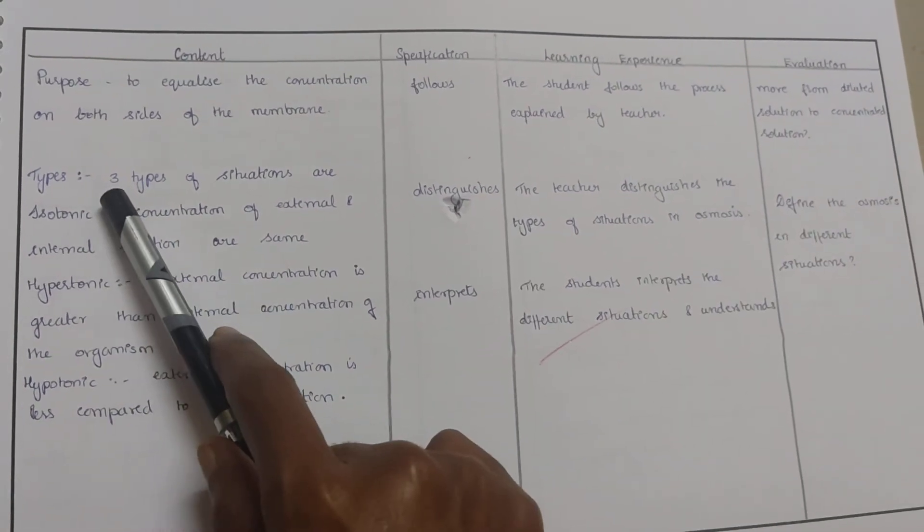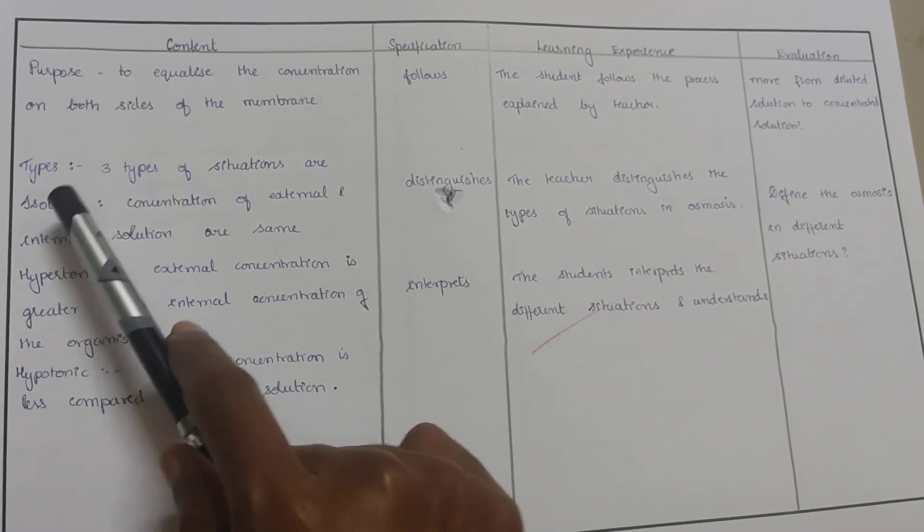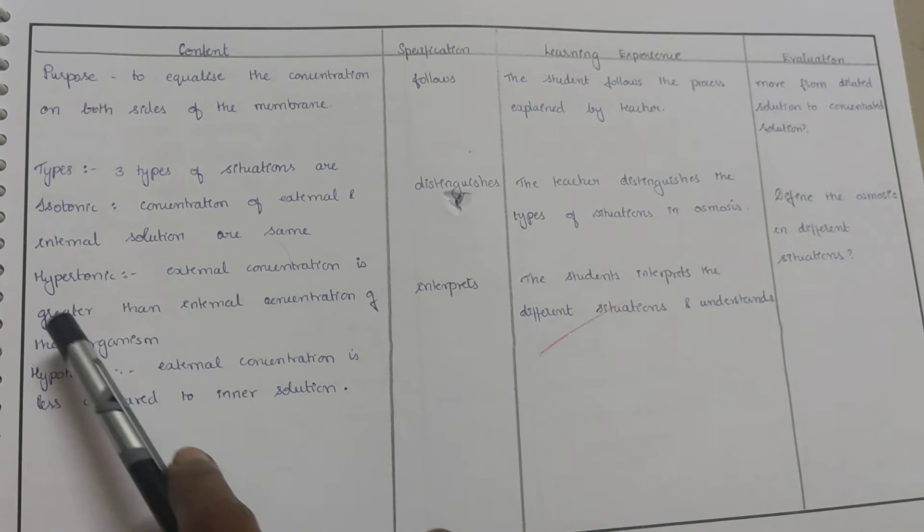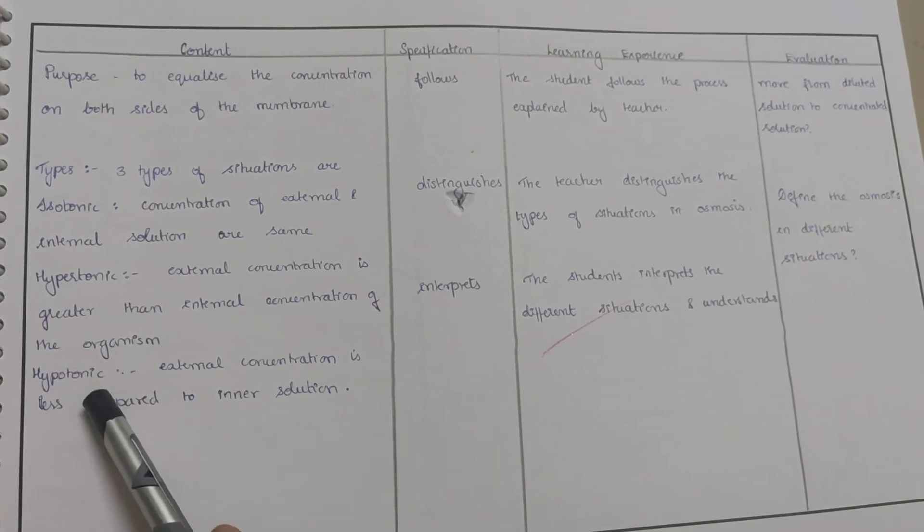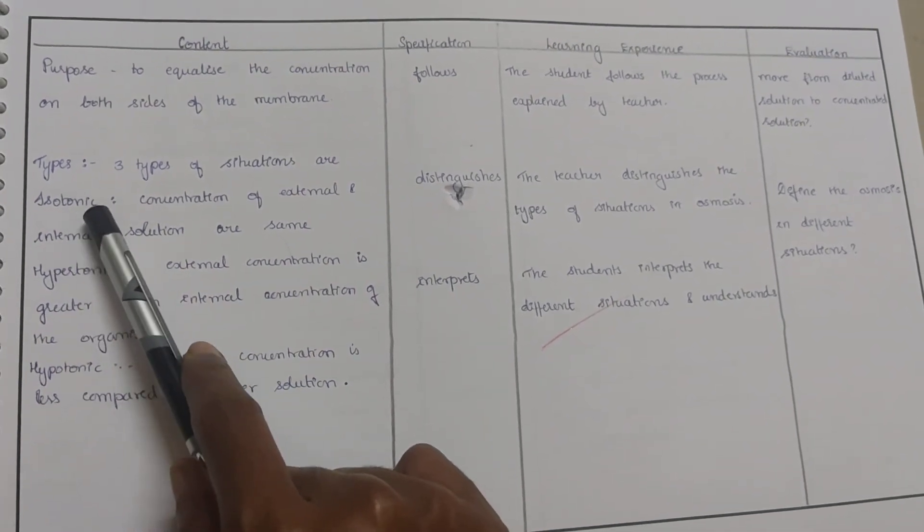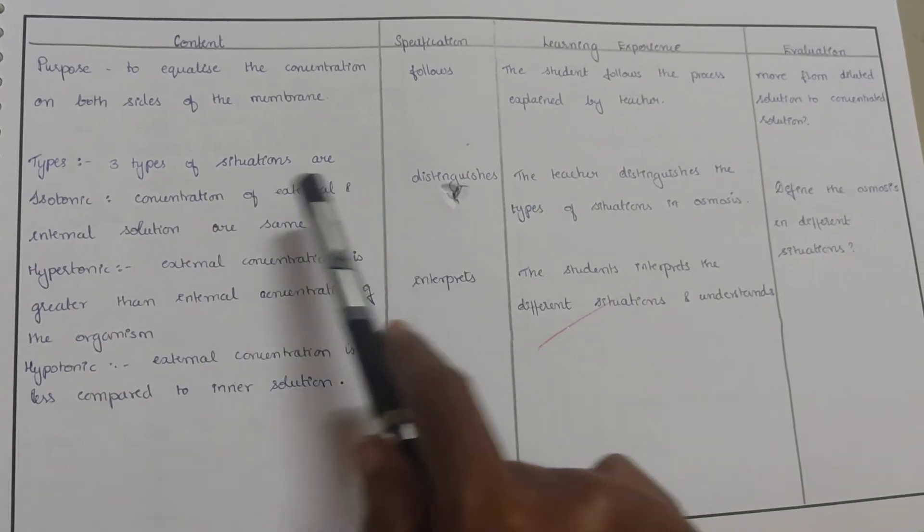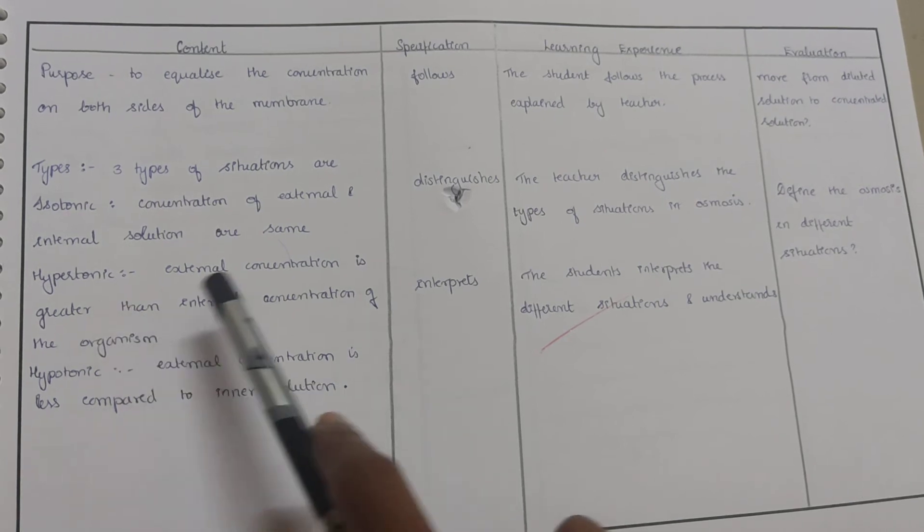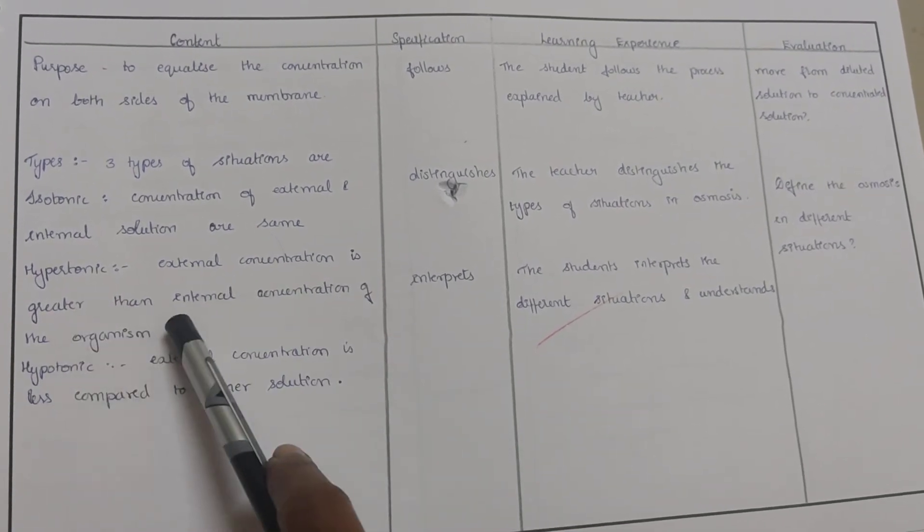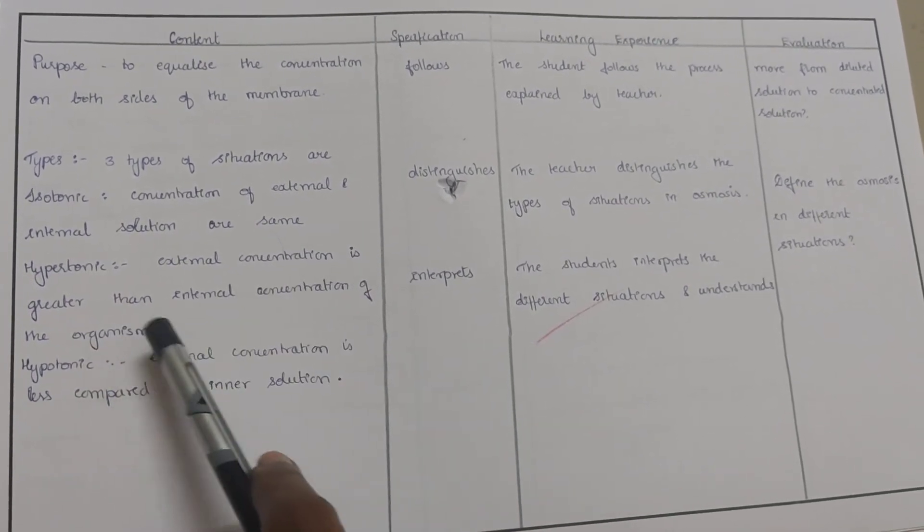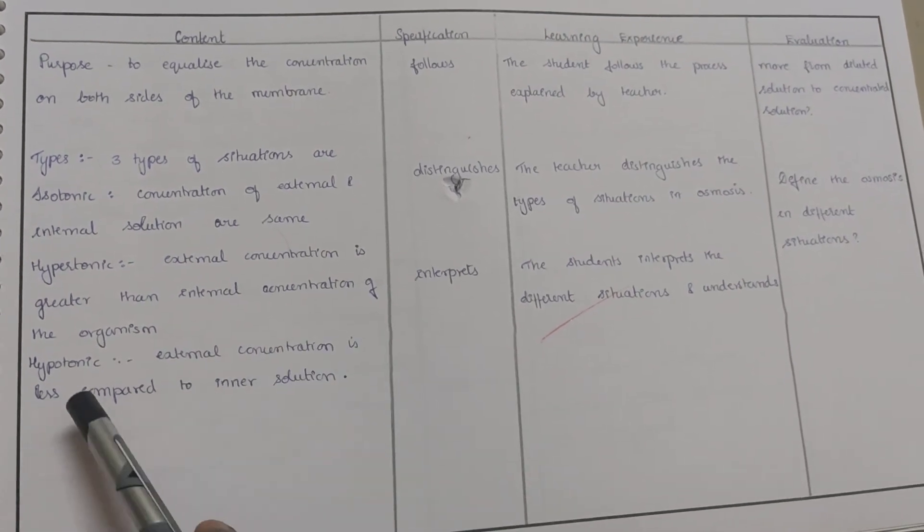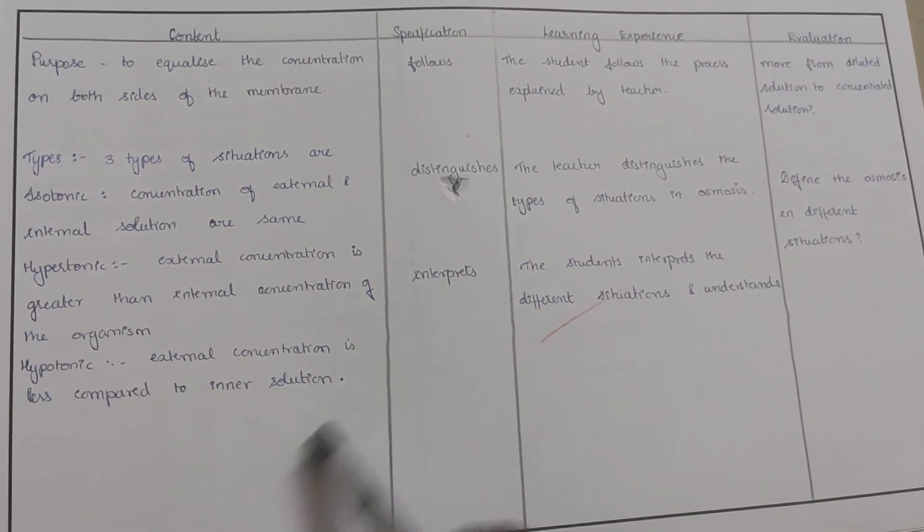Now we move on to the types. Three types of situations are isotonic, hypertonic and hypotonic. Isotonic: concentration of external and internal solution are the same. Hypertonic: external concentration is greater than internal concentration of the organism. Hypotonic: external concentration is less compared to the inner solution.